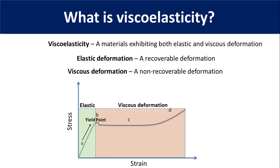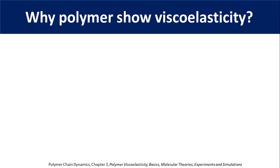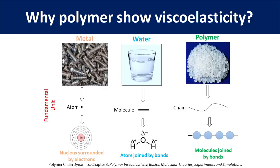Now let's discuss why polymeric material shows both elastic and viscous deformation. I'm not going to get into the in-depth analysis of the molecular mechanism or use mathematical models to explain the deformation behavior. But I will discuss some key parameters and provide a general understanding of molecular motion responsible for the viscoelastic behavior. Those interested in learning more about the molecular mechanism will find a reference provided in the slide. In my previous video, Introduction to Polymer, I provided some explanation and examples of how polymeric material differs from other chemical and metallic materials.